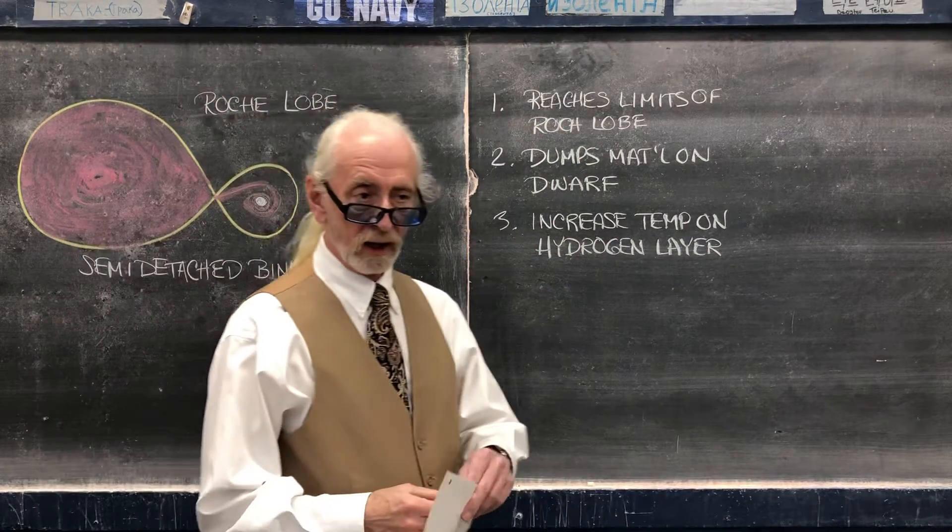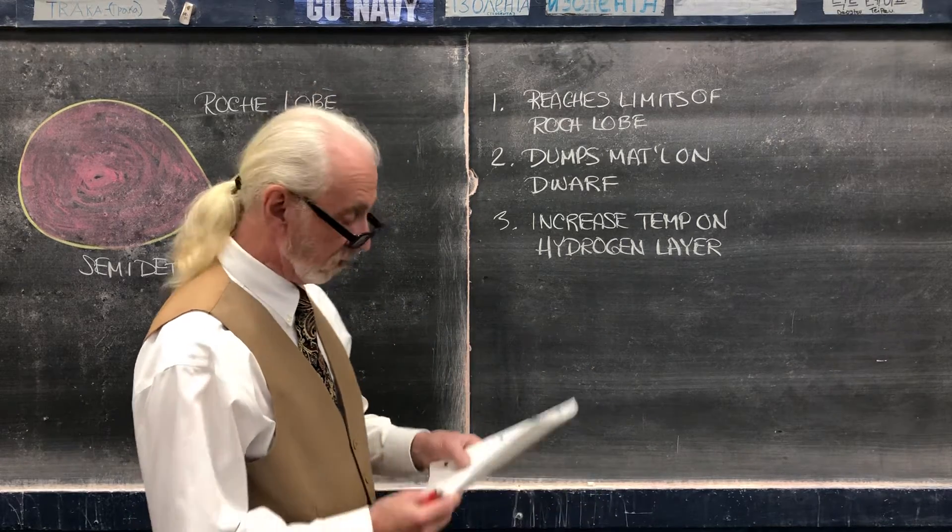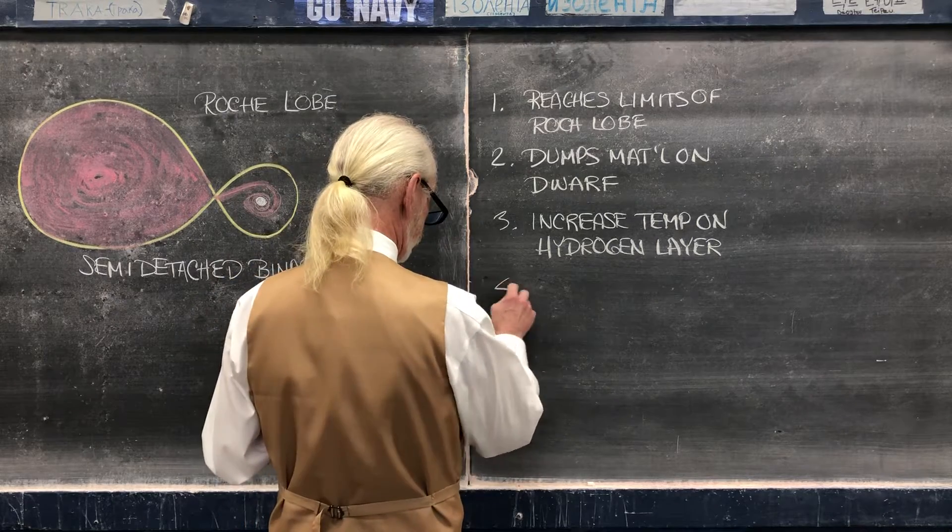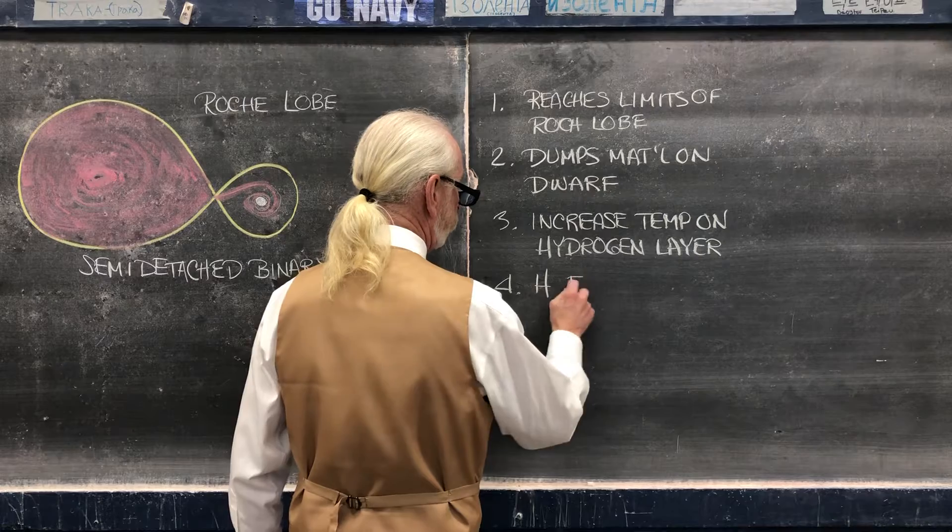At 10 times 10 to the 6 kelvins, in other words, 10 million kelvins, what do you think is going to happen? So hydrogen fusion blows off the whole layer.